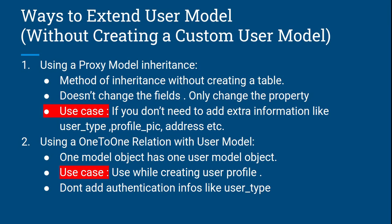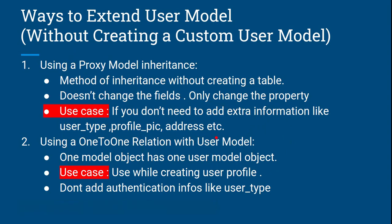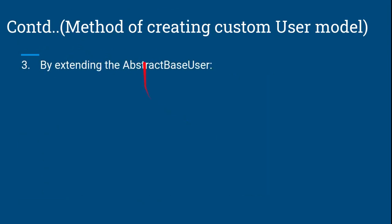The second category is creating a custom user model. When you create a custom user model, the database table changes — the user model is extended. There are two methods: first, by extending AbstractBaseUser; second, by extending AbstractUser.